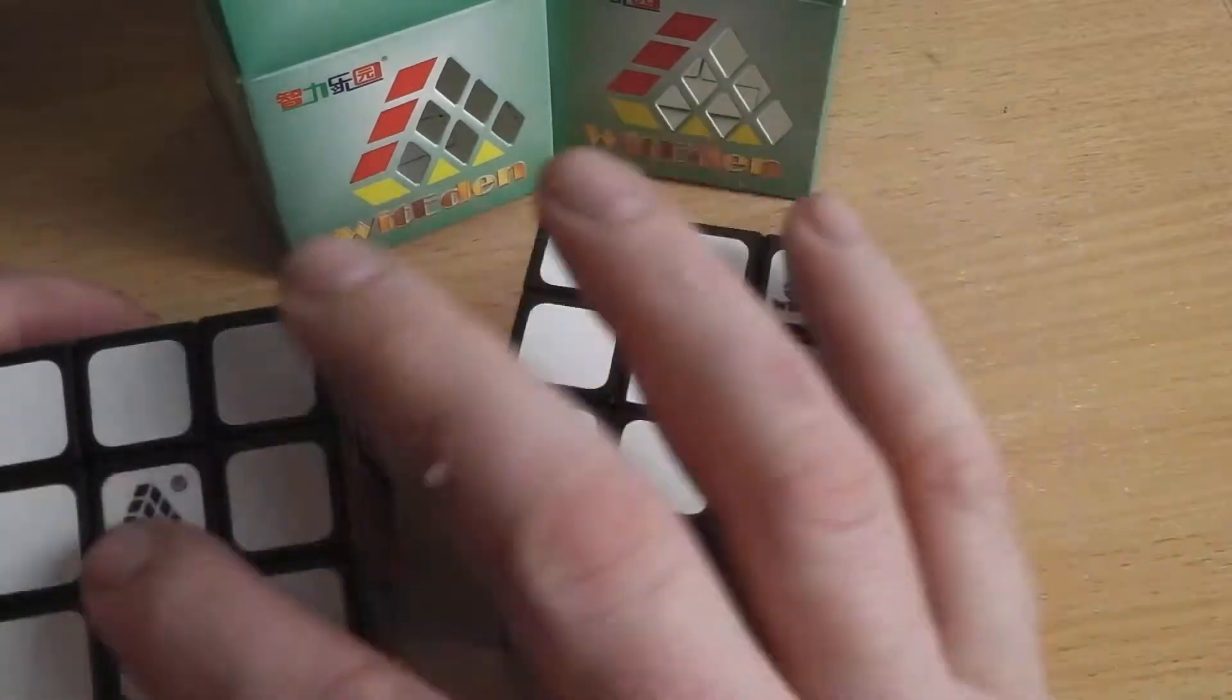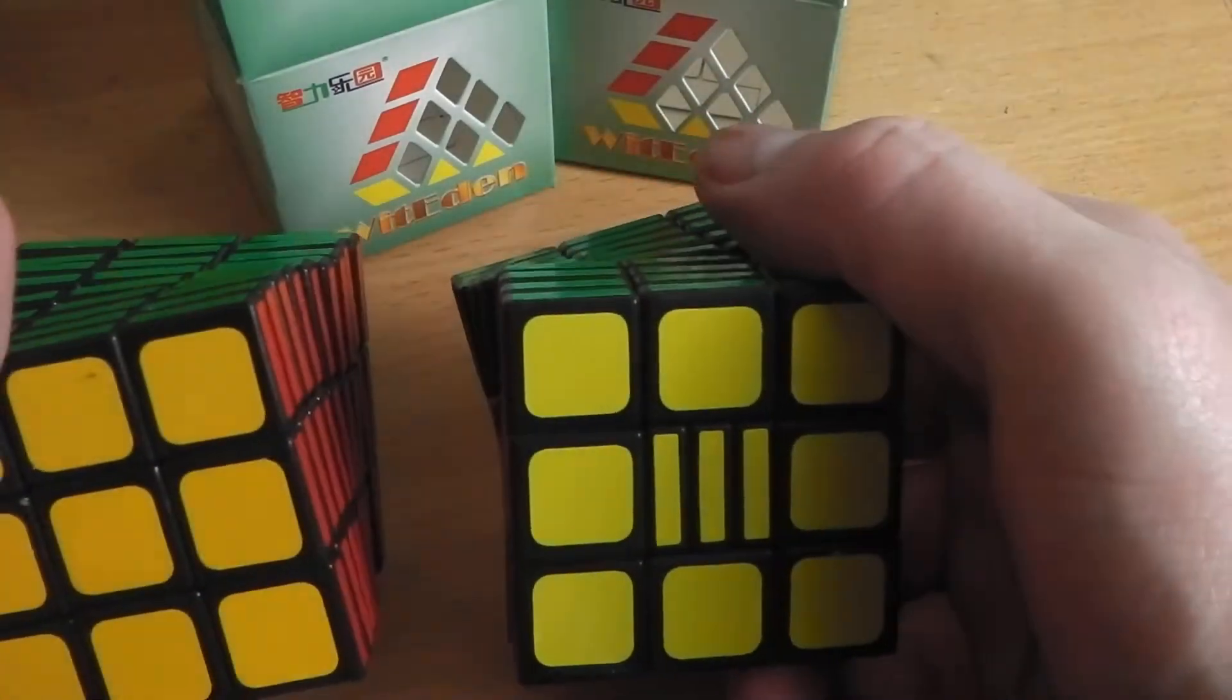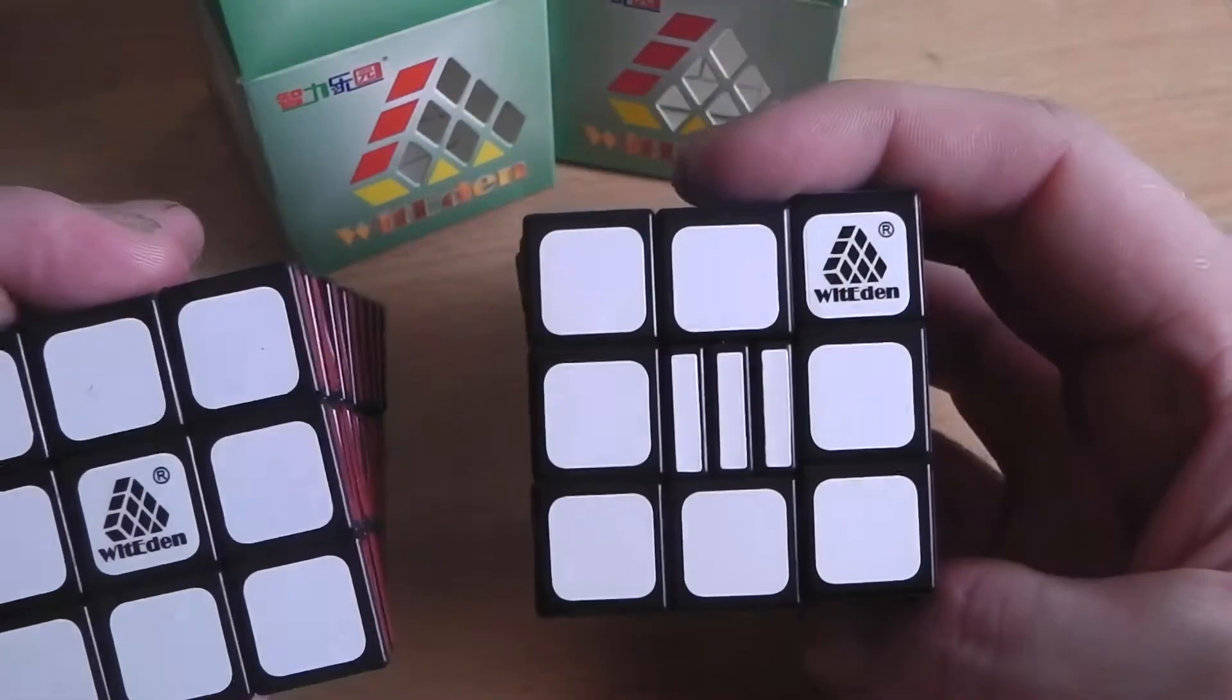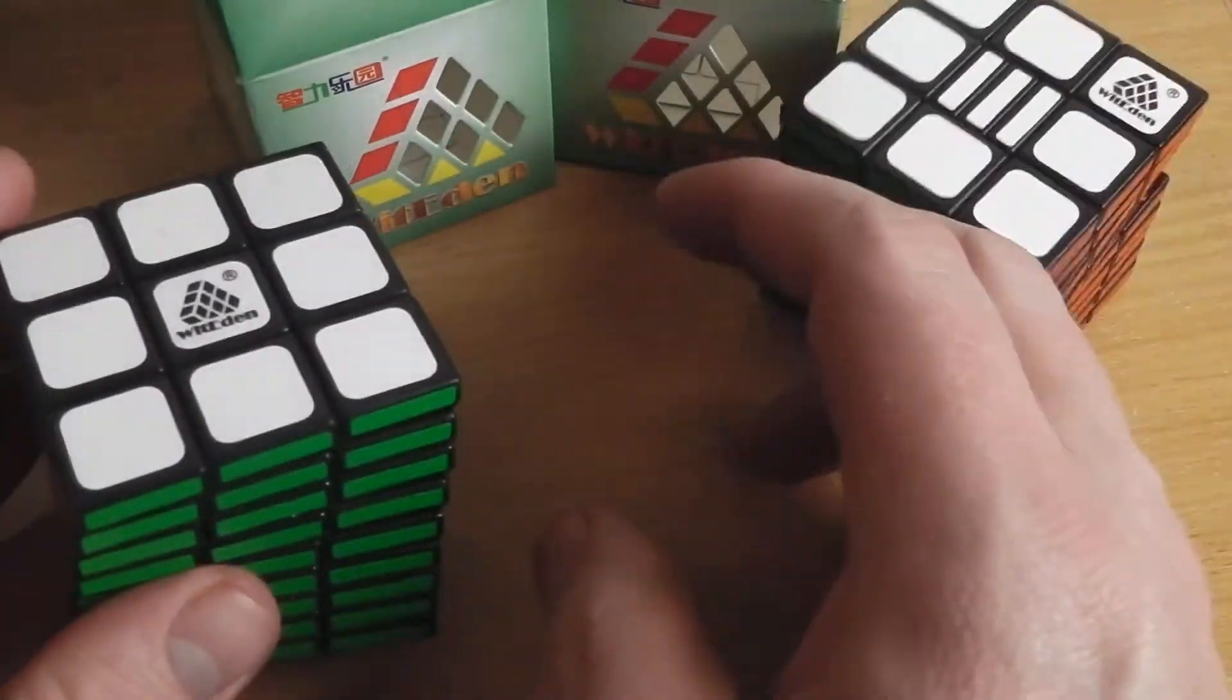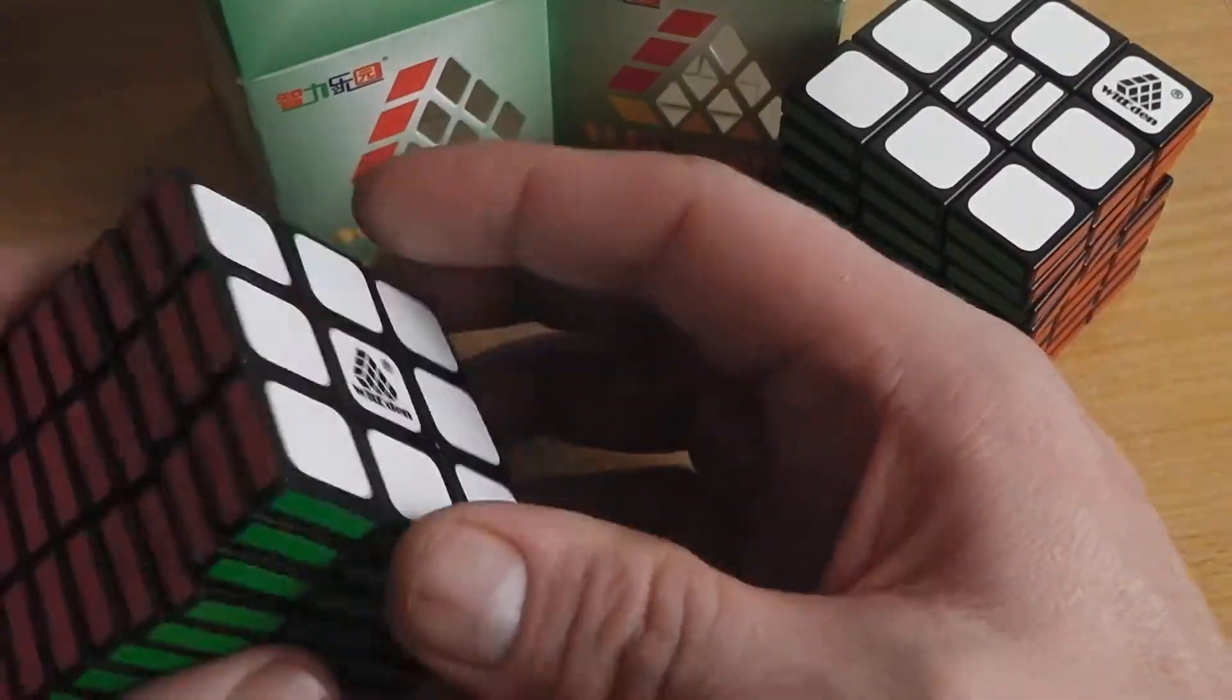The difference is on the top and bottom layers. The center pieces are split into three parts, which means they can also scramble with the rest of the puzzle, offering a little extra challenge.